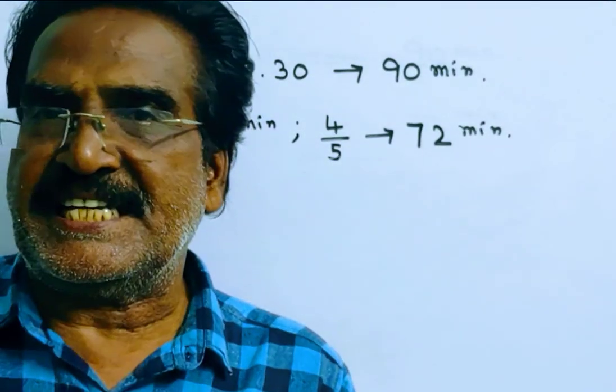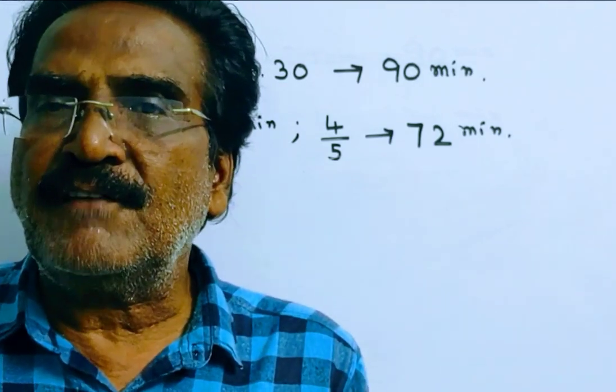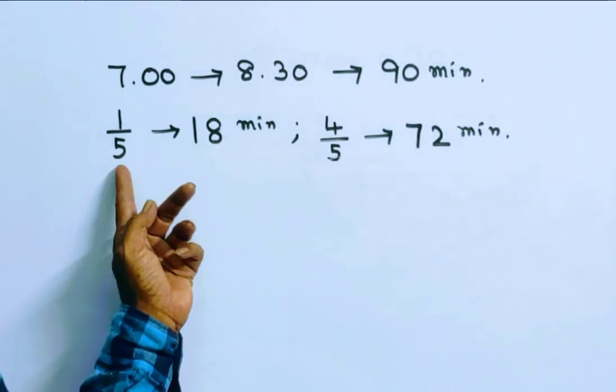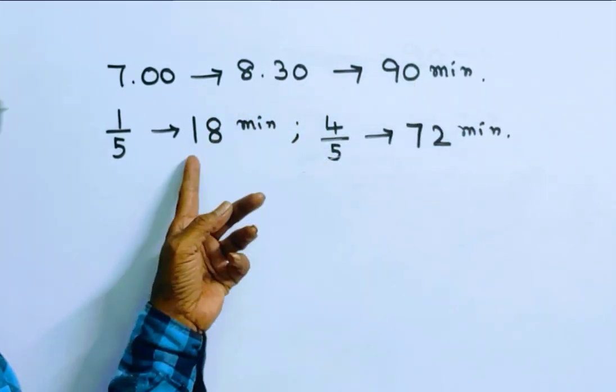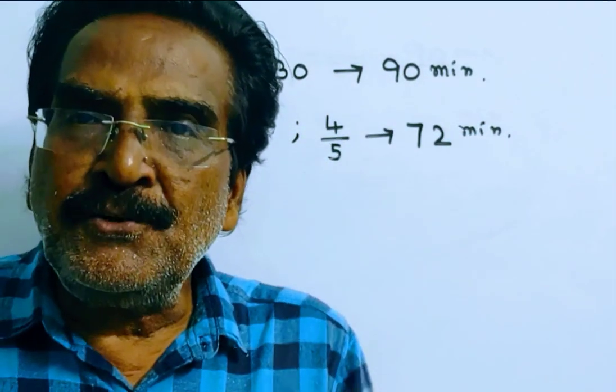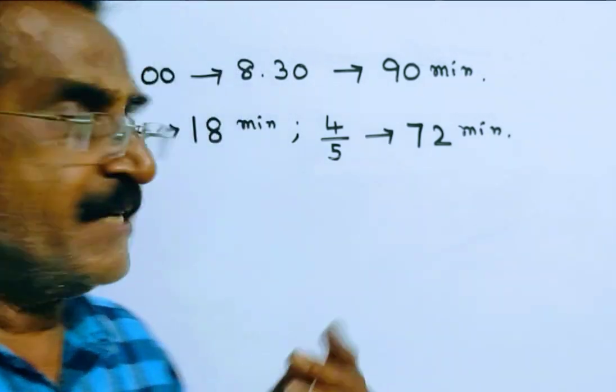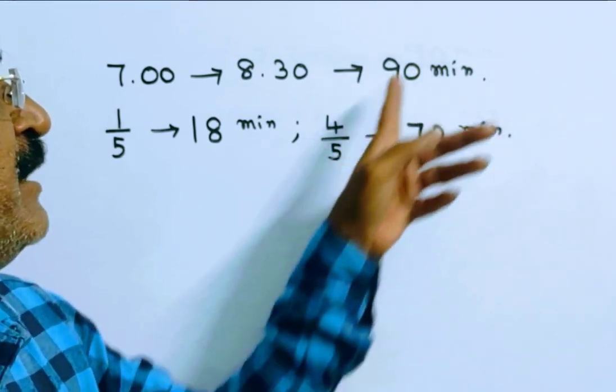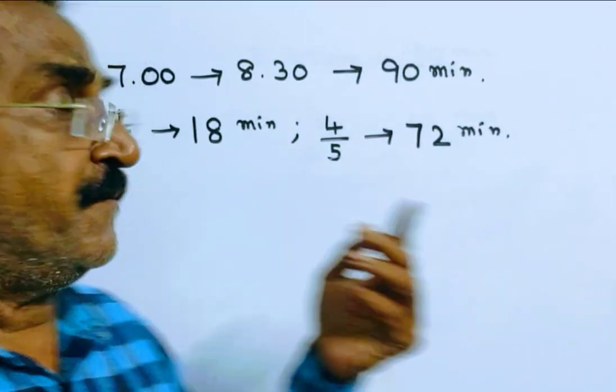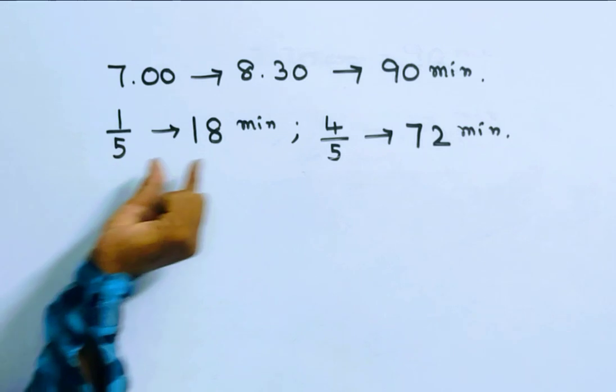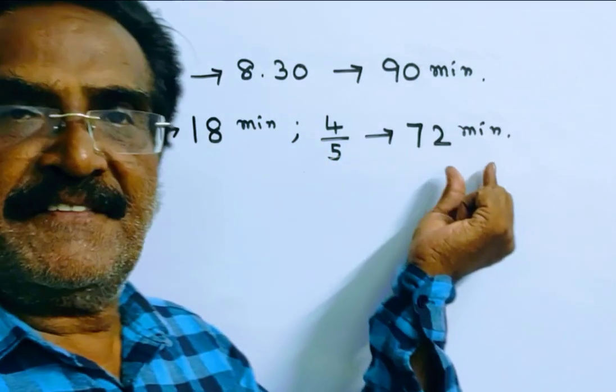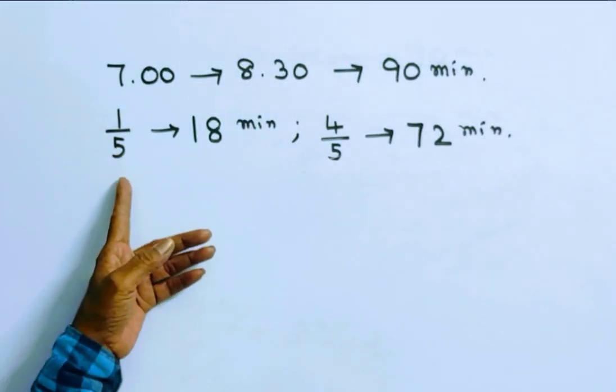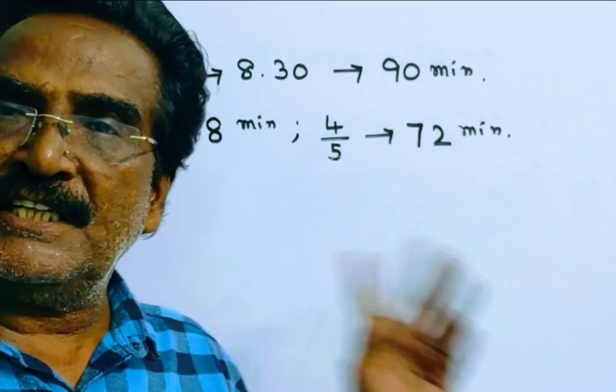To walk one-fifth of the distance, the usual time is 1 by 5 of 90, which is 18 minutes. And the usual time to walk the remaining distance, 4 by 5, is 4 by 5 into 90, which is 72 minutes. So these 18 minutes and 72 minutes are usual times to walk one-fifth of the distance and 4 by 5 of the distance.